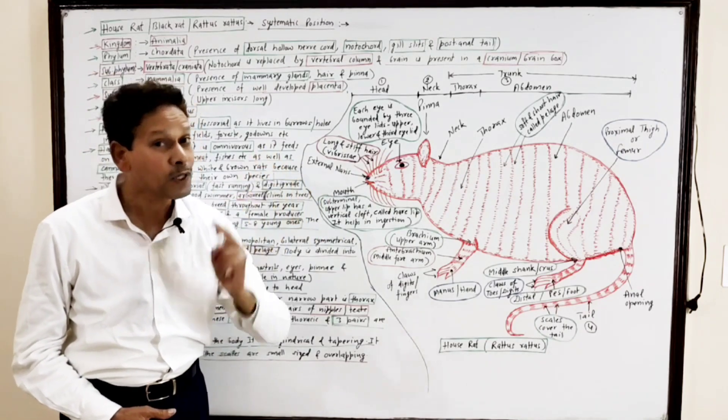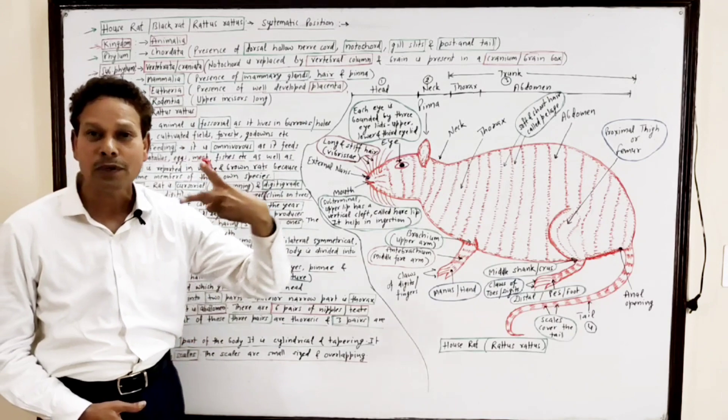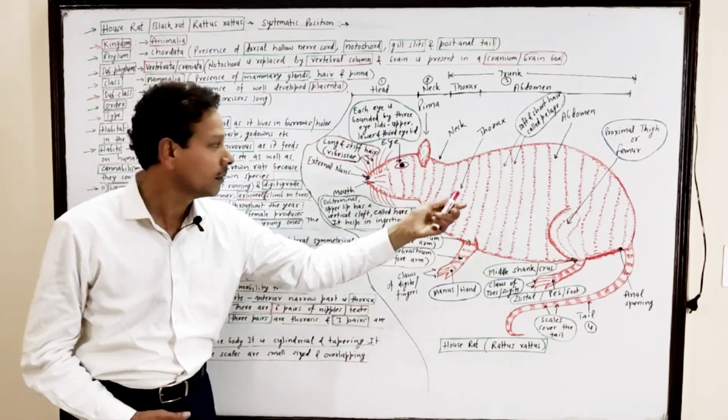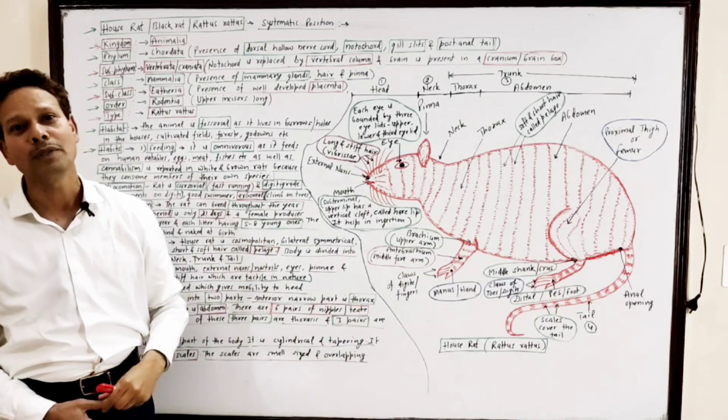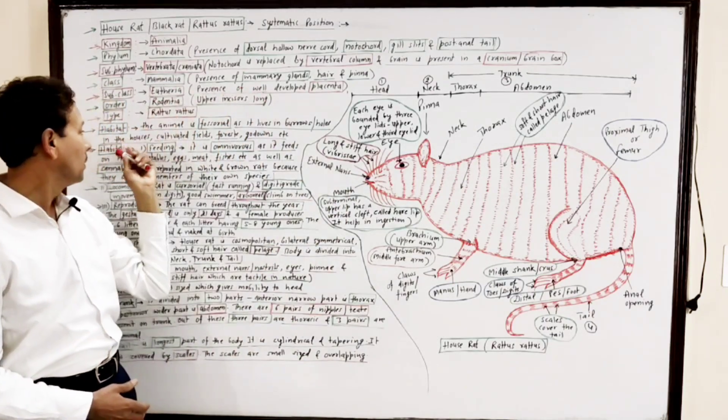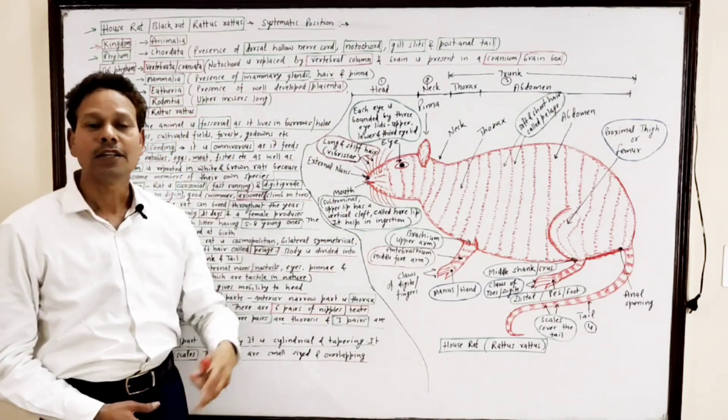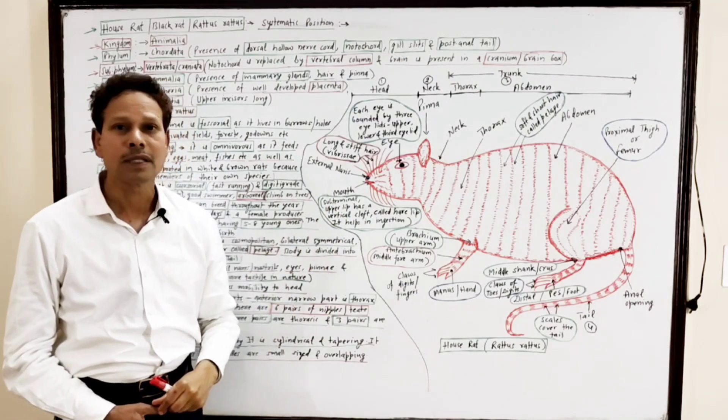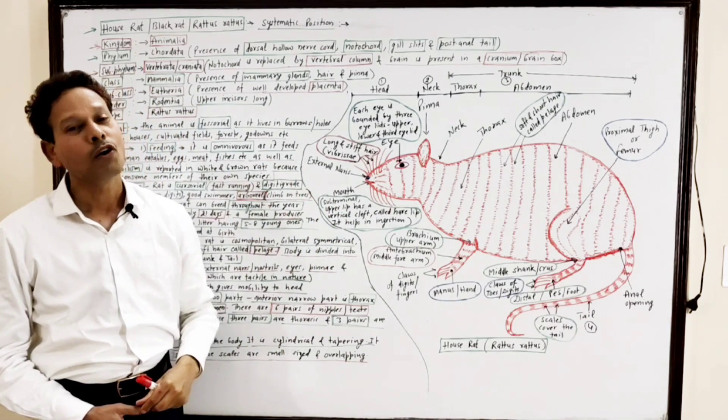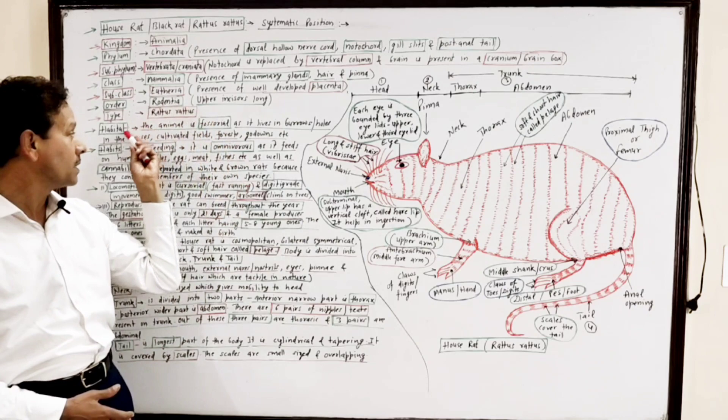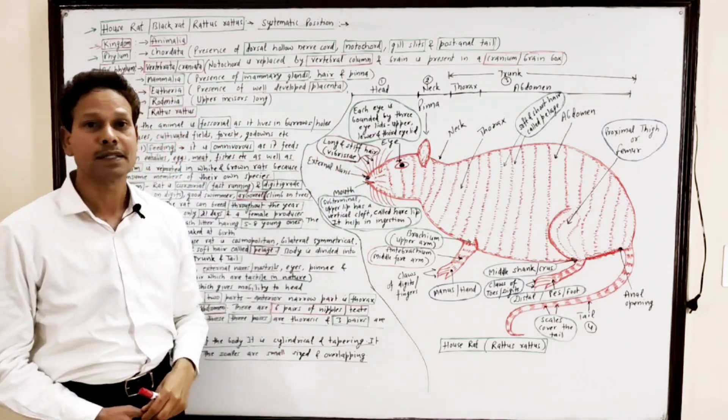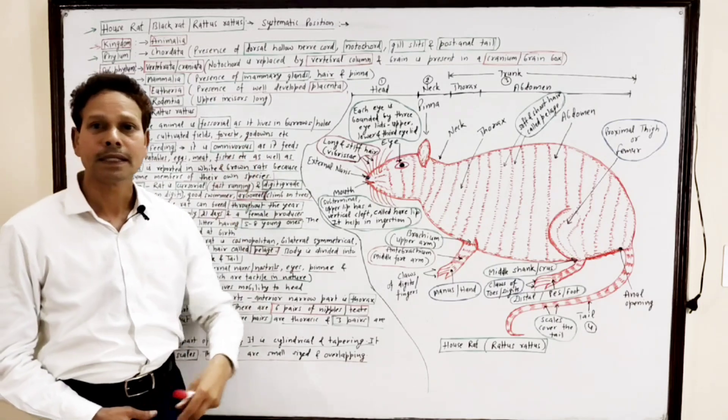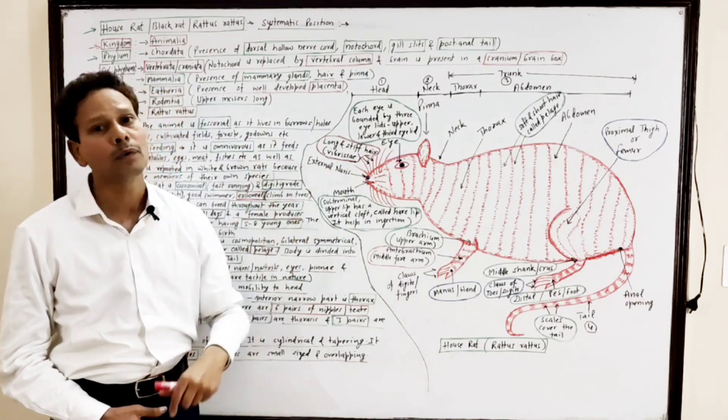The animal is fossorial, meaning the rat lives in holes and burrows. Mainly it is found in houses, so it is named common house rat. As well as, rat is found in cultivated fields, in lawns, in forests, in godowns.